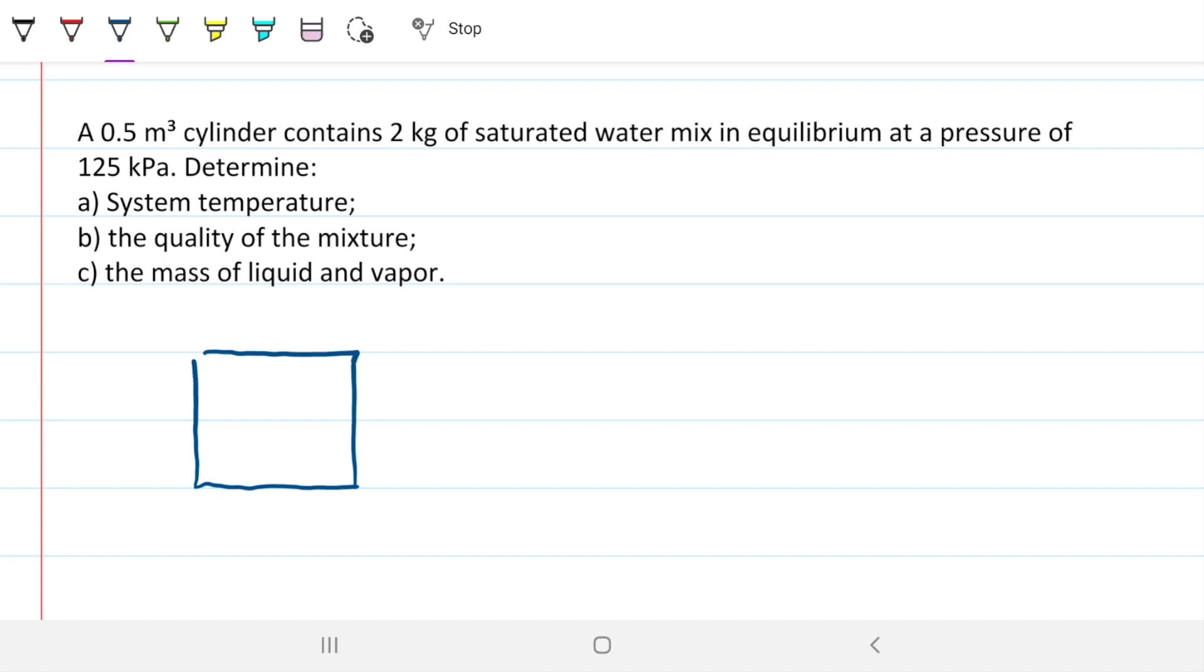In this problem we have a 0.5 meter cubed cylinder that contains 2 kg of saturated water mix in equilibrium at a pressure of 125 kPa. We are to determine the system temperature, the quality of the mixture, and the mass of liquid and vapor. So we have a system, just a little square here to illustrate our system. We have inside the system liquid water, and we also have vapor. The volume of this guy here is 0.5 meters cubed, and we know that inside this 0.5 meters cubed we have 2 kg of this mix.